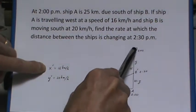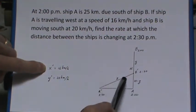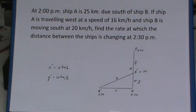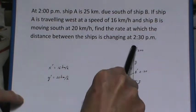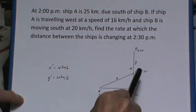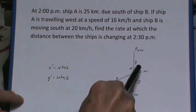As you see, y is lengthening and x is lengthening as these ships move. And we have to find the rate at which the distance between the ships is changing at 2:30. So I've marked 2:30 on the diagram here. This is where ship B is at 2:30 and this is where ship A is at 2:30, marked with B' and A'.